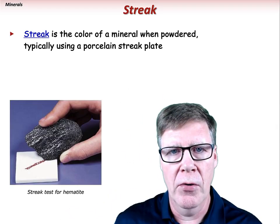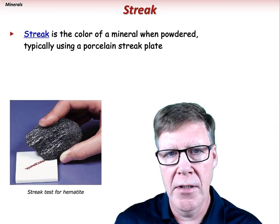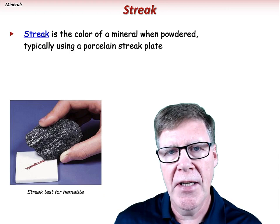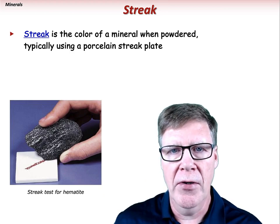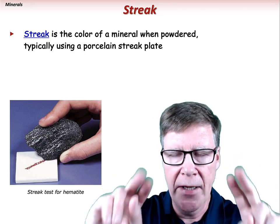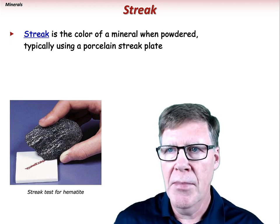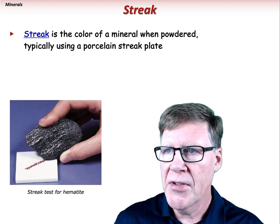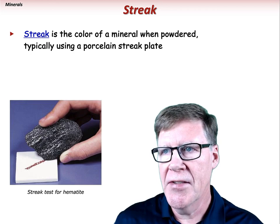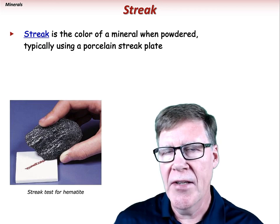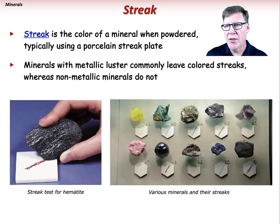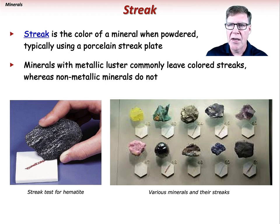Streak is the color of a mineral when it is powdered. The streak test is typically accomplished by rubbing the mineral against a porcelain streak plate and observing the color of the powdered streak. Hematite, for example, produces a dark gray streak. Minerals with metallic luster typically leave colored streaks, whereas non-metallic minerals generally do not.